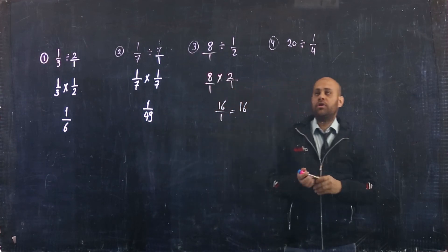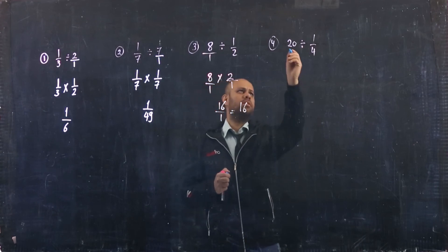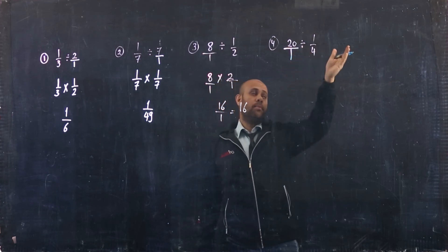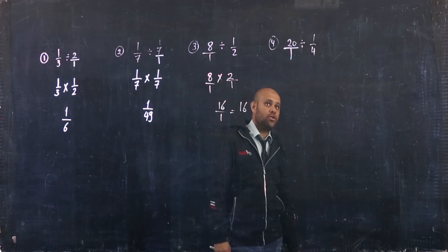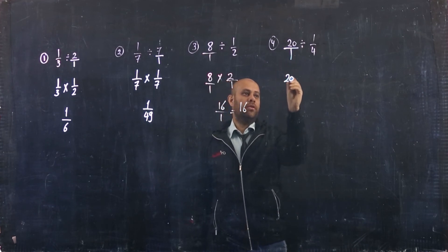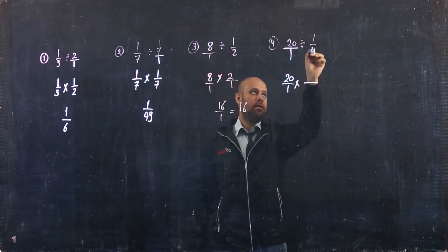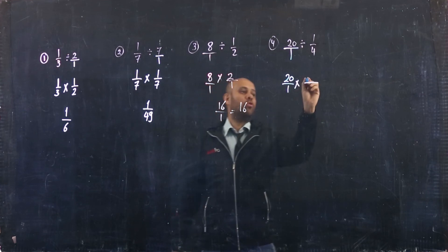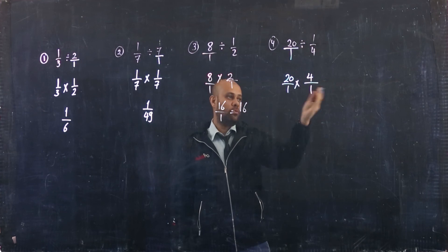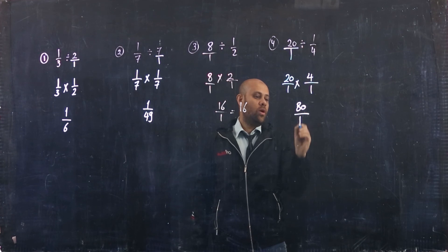The last example: 20 divided by 1/4. You may write 20 as 20/1 but don't find its reciprocal — only find the reciprocal of the number after the division sign. So 1/4 becomes 4/1. Multiply numerator by numerator and denominator by denominator: 20 multiplied by 4 equals 80, and 80 over 1 equals 80.